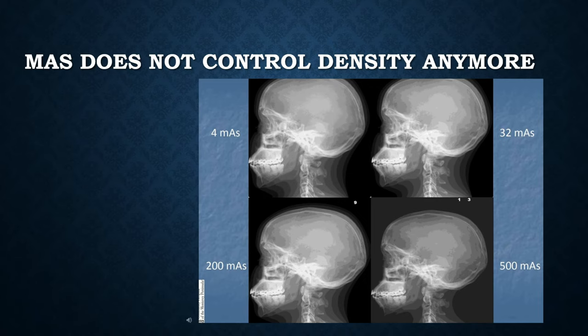Just from going from film to CR, you can increase your KV by 15 or 20. However, for Konica, it would be 5 or 10. And for most DR, you can actually use about 10 to 15 times too much mAs and still get an acceptable image.